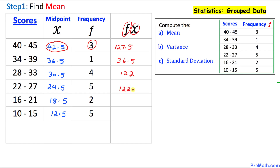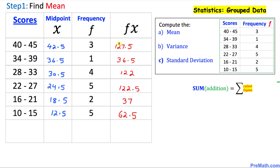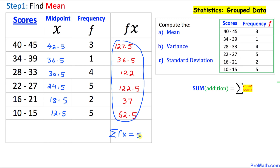The next value is 122.5, then 37, and then 62.5. Now we are going to add up all these values in this column using sigma notation. Sigma of f times x equals 508 when we add these values.